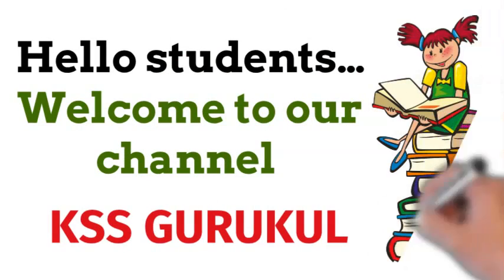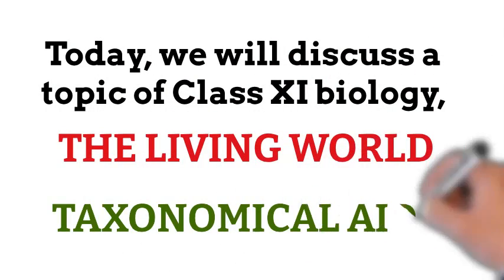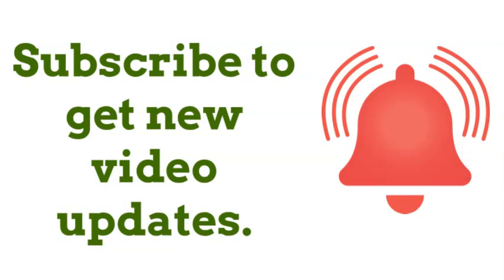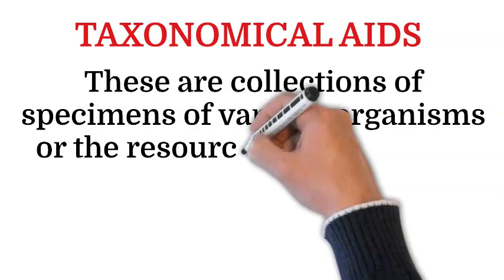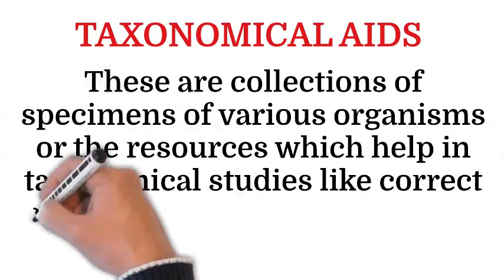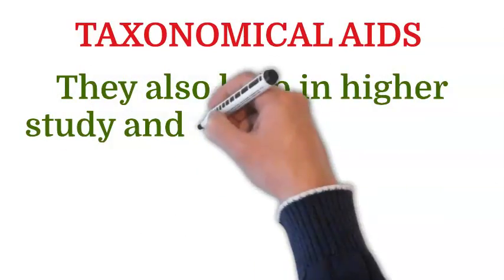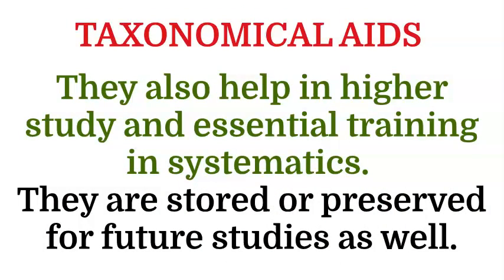Hello students, welcome to our channel KSS Gurukul. Today we will discuss a topic of class 11 biology: taxonomical aids. Taxonomical aids are the collection of specimens of various organisms, or the resources which help in taxonomical studies like correct classification, identification and naming. They also help in higher study and essential training in systematics, and are stored or preserved for future studies as well.